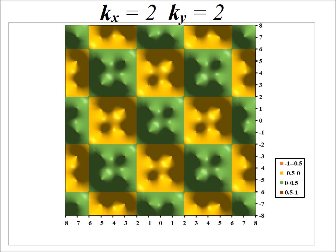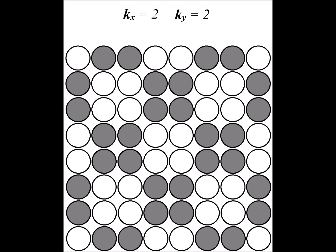Now if both kx and ky are equal to 2, we get the following eigenfunction. Here is the simplified diagram showing the phase relationships when both kx and ky are equal to 2.